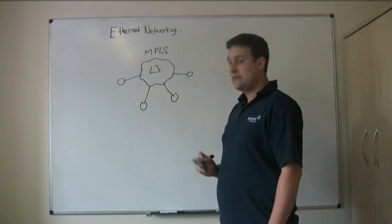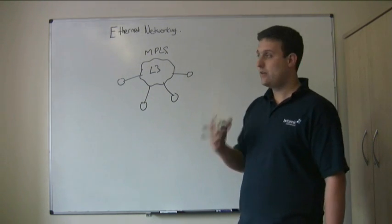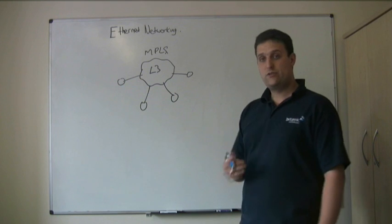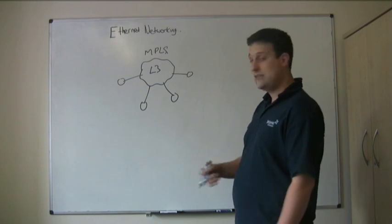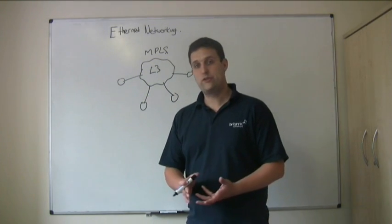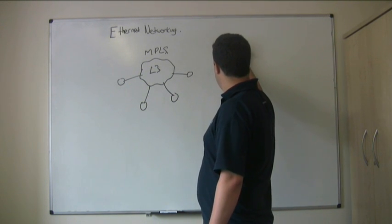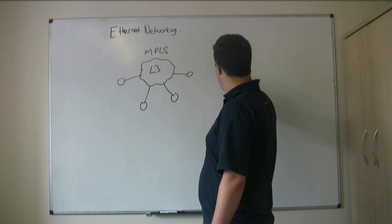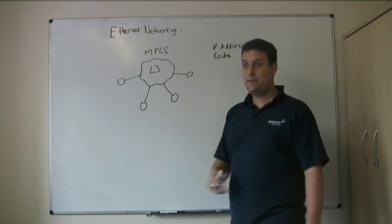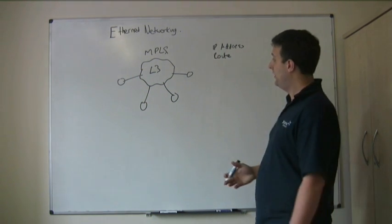This MPLS cloud is a layer-3 service. This means traditionally the provider will dictate to you what your IP addressing will be on there and how you should route across your network.